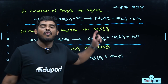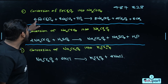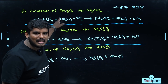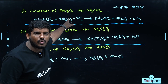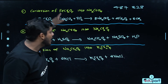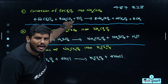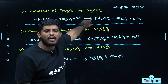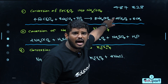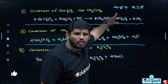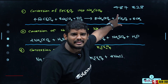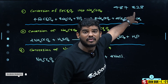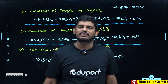4 FeCr2O4 plus 8 Na2CO3 (Sodium Carbonate) — Iron Chromite and Sodium Carbonate will react in the presence of Oxygen. We will get Sodium Chromate, Fe2O3 (ferric oxide), and carbon dioxide.